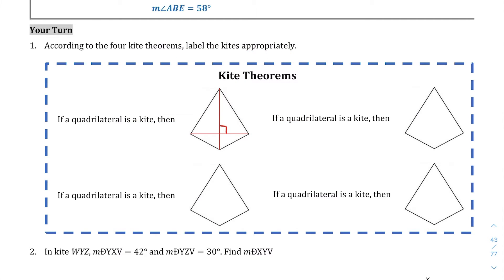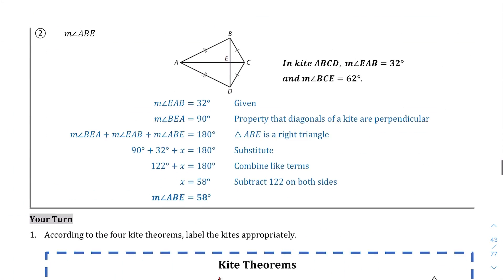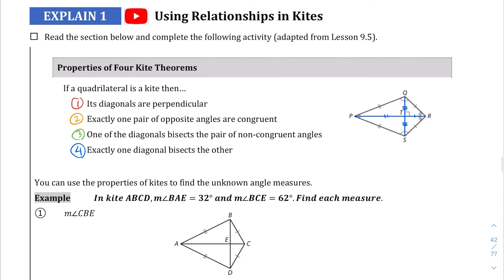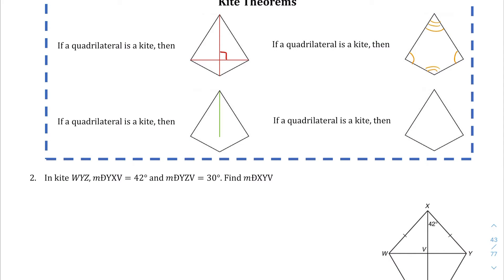The other property was that if you have a kite, exactly one pair of opposite angles are congruent. So this angle is going to be congruent to that, but these are not going to be congruent. The third one: if a quadrilateral is a kite, one of the diagonals bisects a pair of non-congruent angles. So this diagonal is going to bisect this angle here.